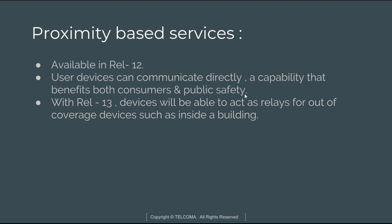This type of communication is also known as sidelink communication. Consumer devices can find other devices only with assistance from the network — this is device-to-device communication. However, for public safety devices, two or more public safety devices can communicate directly with one another independent of the network. Proximity services include public safety applications, commercial services, discovery of devices in proximity, and direct communication between devices for various applications and services.